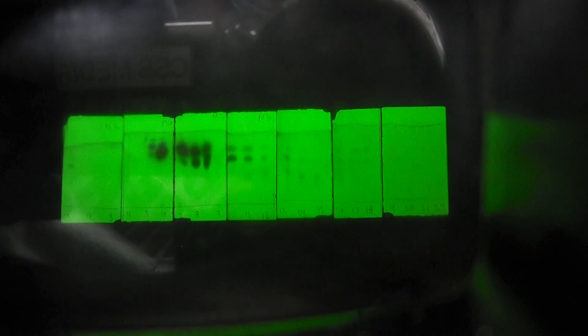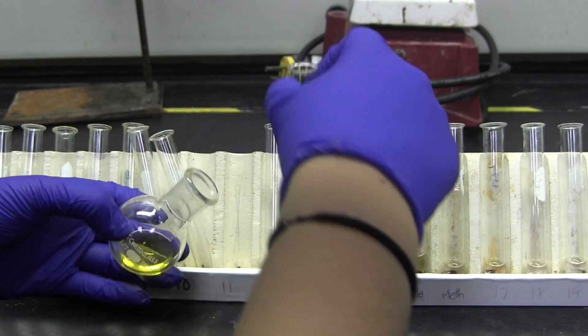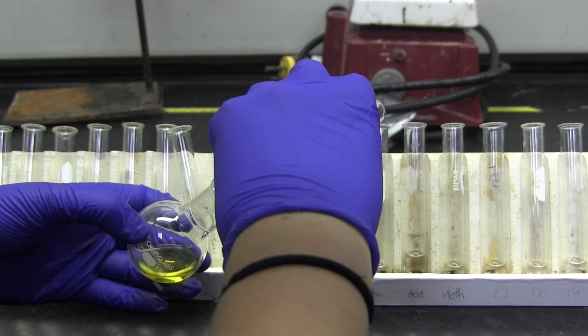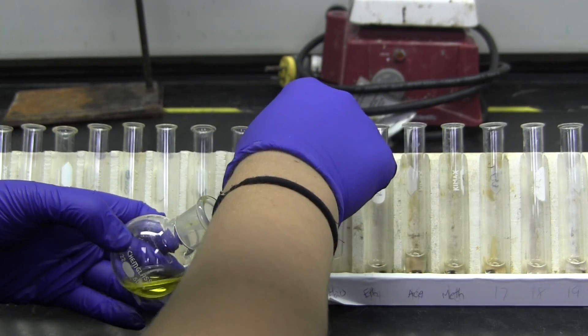Once unknown stops coming off the column, combine like fractions, meaning in separate containers, put all the fractions with the top spot together and all the fractions with the bottom spot together. Do not include the fractions that have both unknowns in it.